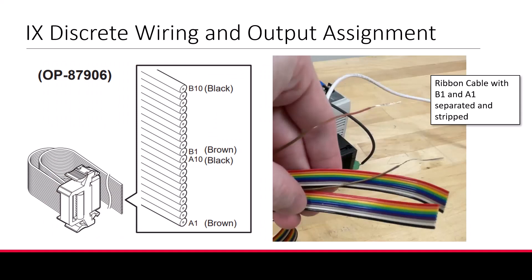Now let's look at our ribbon cable, which is composed of 8 input wires, 10 output wires, and 2 unused wires. You'll have to strip some insulation from these wires. I pre-stripped the two wires we'll be using today.